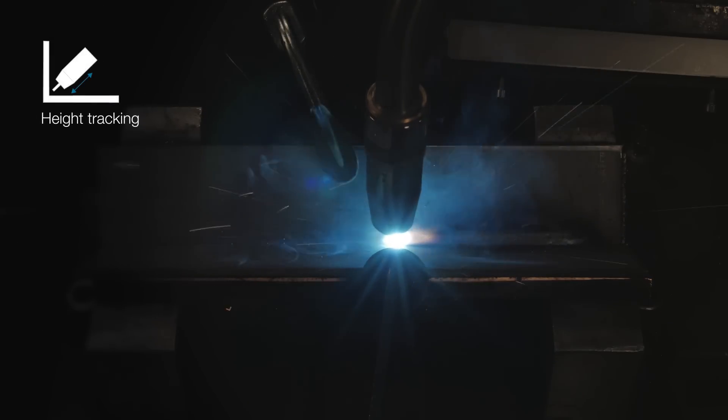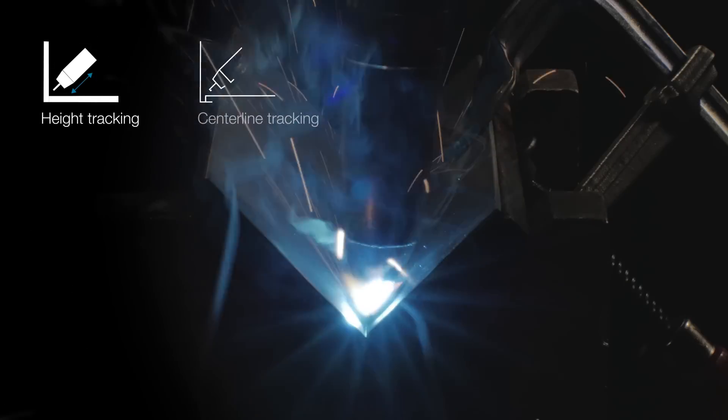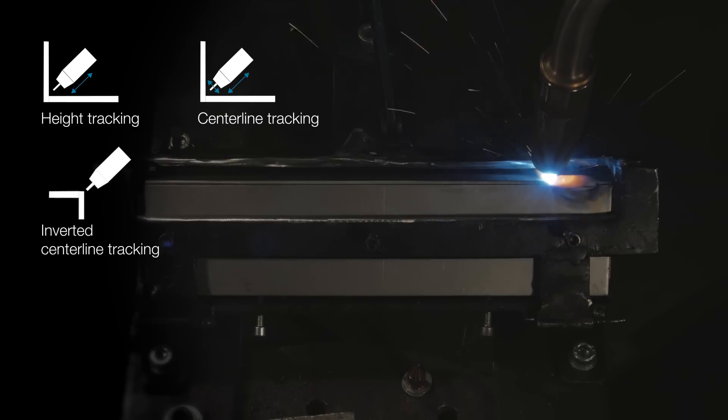WeldGuide 4 handles six tracking modes. One: Height tracking to maintain the distance from the contact tip to the joint. Two: Centerline tracking for height sensing with weaving. Three: Inverted centerline tracking for V-shaped weaving.